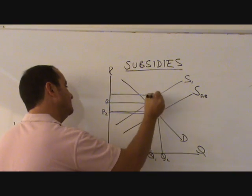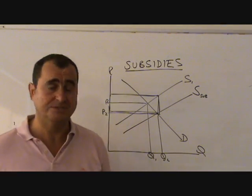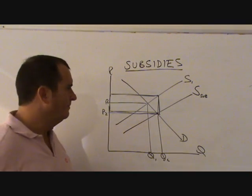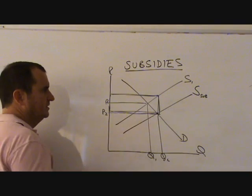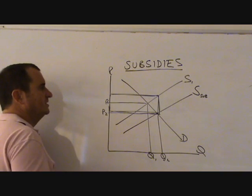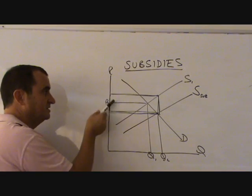This is the cost of the subsidy to the government, because it's the subsidy per unit times the number of units. But look at that subsidy per unit. That is not equal to the fall in price. Consumers have only experienced that much fall in price. That means that the producers are keeping the rest of the subsidy.